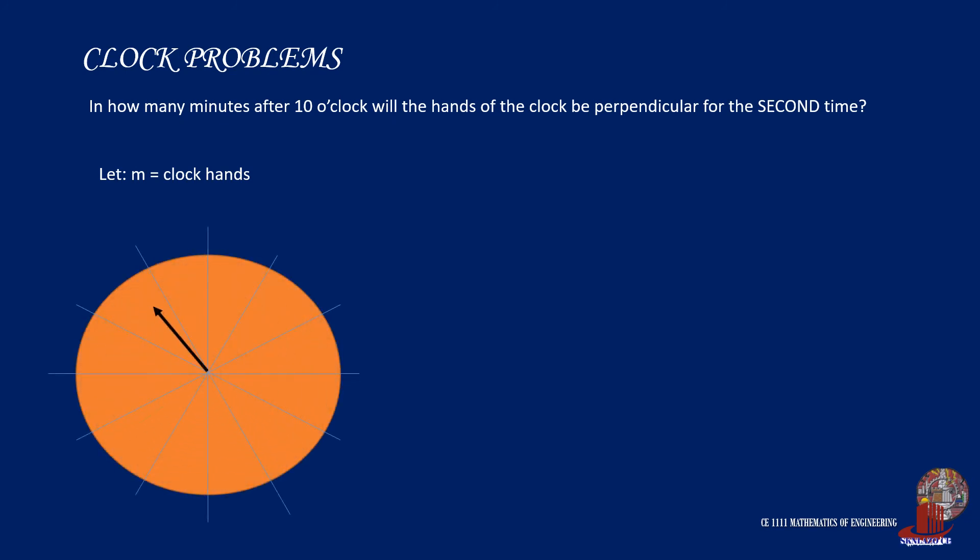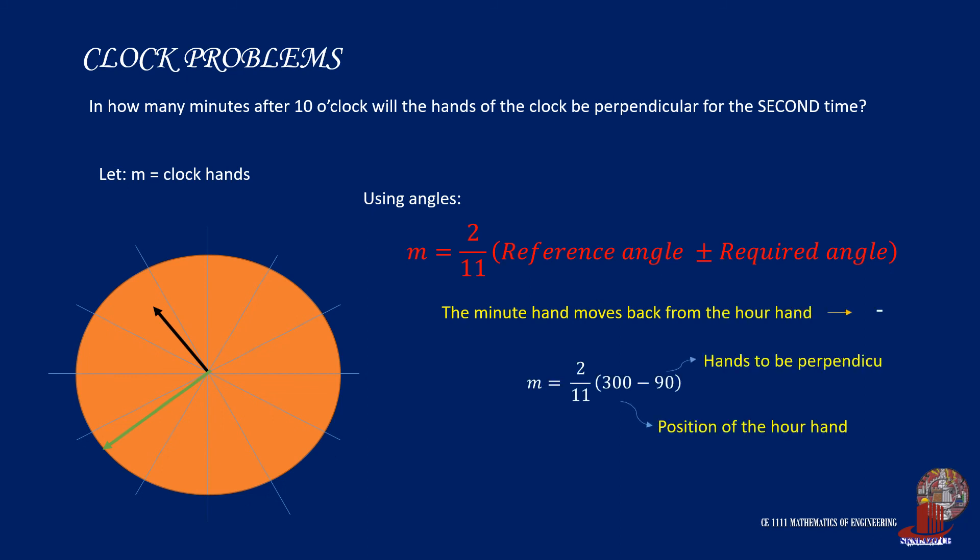What if we are to solve the second instance of having perpendicular hands with the previous problem? In how many minutes after 10 o'clock will the hands of the clock be perpendicular for the second time? If we use the angles formula, we would need to subtract the angles instead of adding them. By plugging the values, we would arrive at m equals 38.18 minutes, saying that the time will be 10:38.